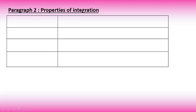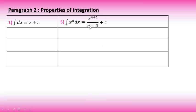Paragraph number 2: Properties of integration. Property 1: ∫dx = x + c. Property 2: ∫xⁿ dx = xⁿ⁺¹/(n+1) + c. This is the basic property — the whole lesson derives from this. Property 3: ∫(1/x²) dx = −1/x + c. We will memorize these but also prove the first few.